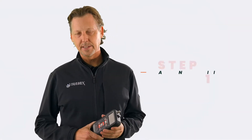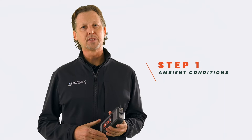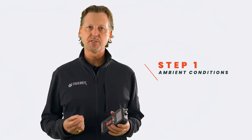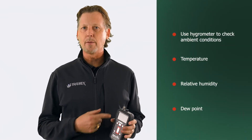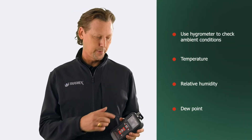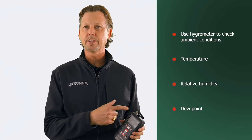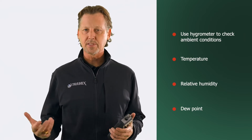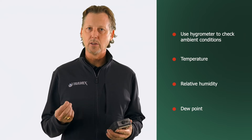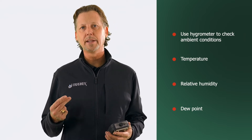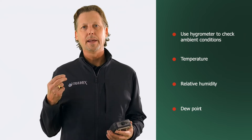For the first step, we're going to be looking at ambient conditions. It's important to understand that these conditions can change and that they will affect results of the test. The necessary tool for this is a hygrometer, which might be attached to a moisture meter in this case, or it can be a separate hygrometer. The main points we're going to be looking at are temperature, relative humidity, and dew point.